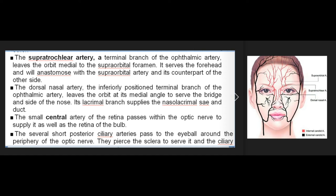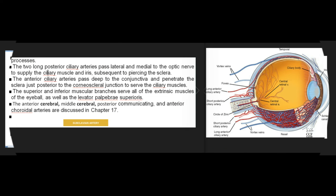The central artery of the retina passes within the optic nerve to supply it and the retina of the bulb. The several short posterior ciliary arteries pass to the eyeball around the periphery of the optic nerve, piercing the sclera to serve it and the ciliary processes. The two long posterior ciliary arteries pass lateral and medial to the optic nerve to supply the ciliary muscle and iris. The anterior ciliary arteries penetrate the sclera just posterior to the corneoscleral junction to serve the ciliary muscles. The superior and inferior muscular branches serve all extrinsic muscles of the eyeball as well as the levator palpebrae superioris.